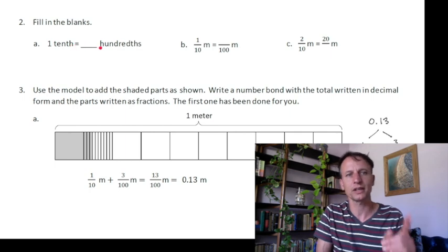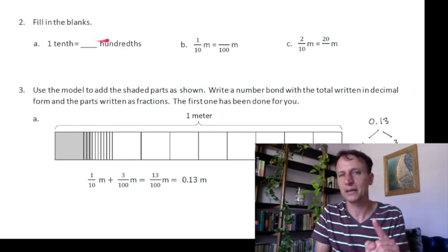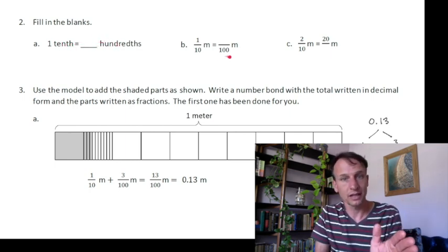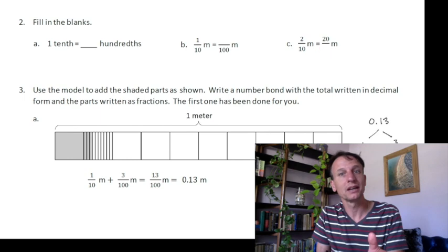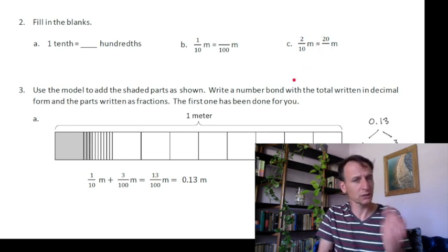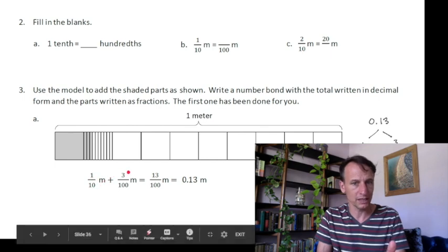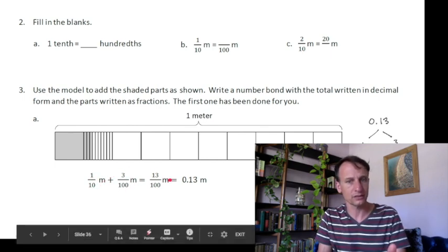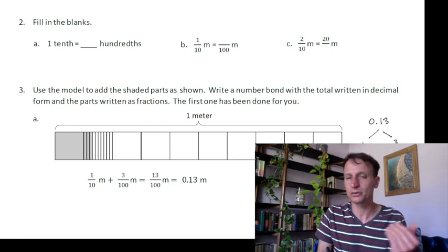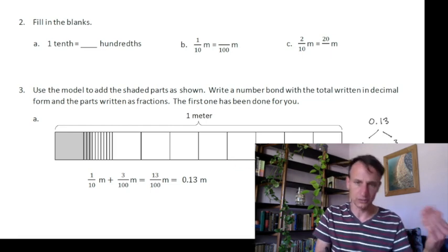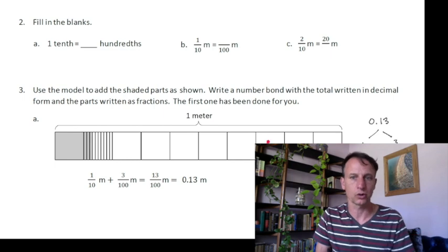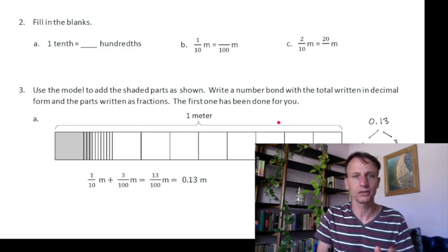Fill in the blanks. A tenth is how many hundredths? Again, think, a dime is how many pennies? Here again, look, one dime is how many pennies? Two dimes is twenty. You see how the relation to money works here? Think again here, it's a dime and three pennies, it's thirteen pennies, it's thirteen cents. See how it helps you to use that relation to money, meters to centimeters, and just the raw numbers to help you understand this and do it.